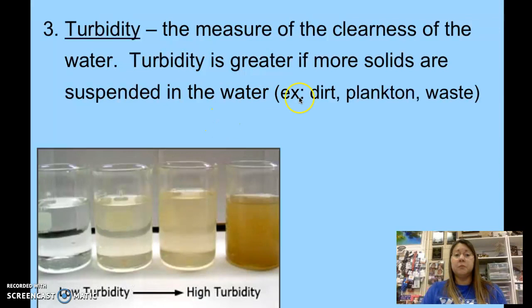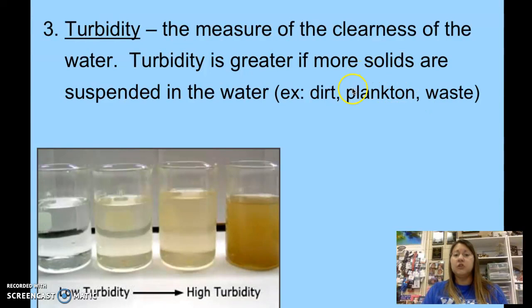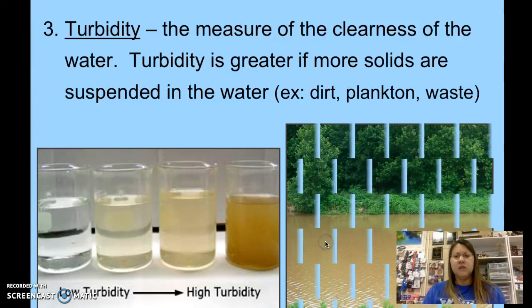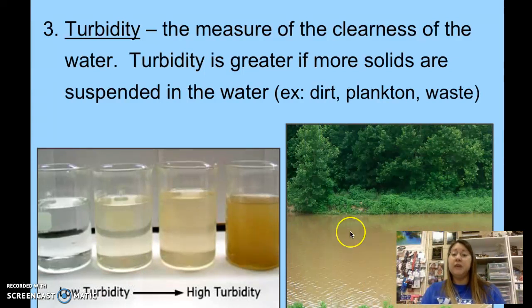Several things contribute to turbidity. Dirt is one, as seen in the previous picture — if there's a lot of sediment or soil dissolved from erosion, like after heavy rain, that causes very high turbidity. Also, plankton — another term for algae. If you have a lot of algae dissolved in water, instead of brown you might have green-colored water. A lot of rivers and lakes around here, like Moss Lake, are brown because of sediment erosion and iron in the soil, giving it a reddish tint from iron oxide.